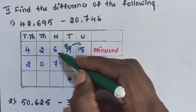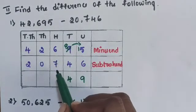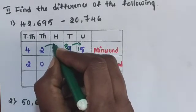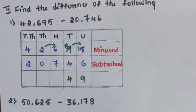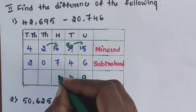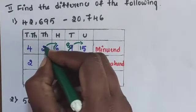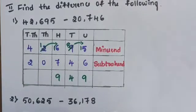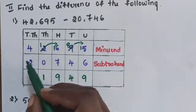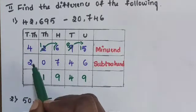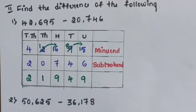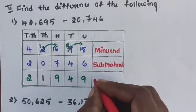Next, subtract in the hundreds place: 6 minus 7 — 6 is smaller than 7. Take a carry from the thousands place; make it 16. 16 minus 7 is 9. The remaining value in the thousands place is 1. 1 minus 0 is 1. Then subtract in the ten-thousands place: 4 minus 2 is 2. The answer is 21,949.